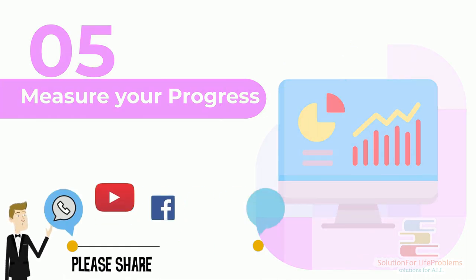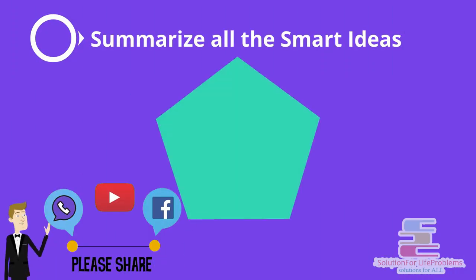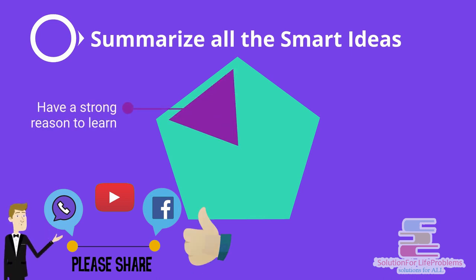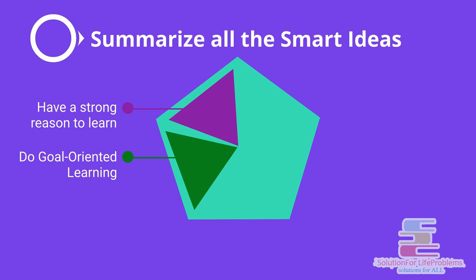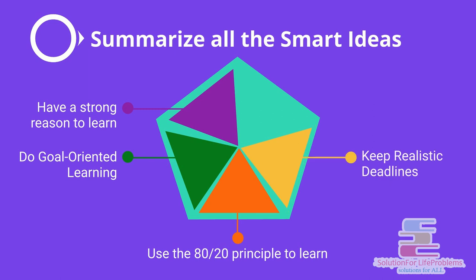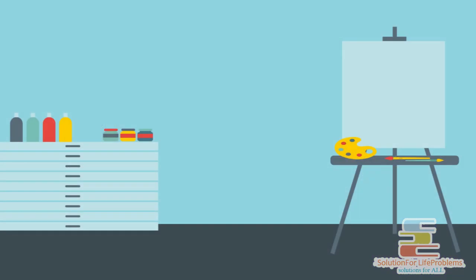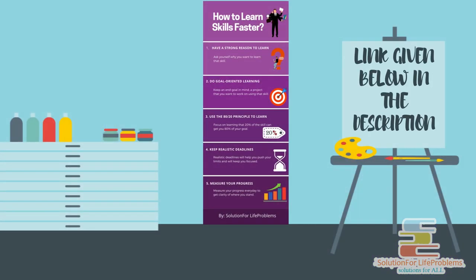Now let's summarize all the smart ideas we have discussed so far. First, having a strong reason to learn. Second, do goal-oriented learning. Third, use the 80 to 20 principle to learn. Fourth, keep realistic deadlines. And fifth, measure your progress. You can also download the infographic summary from the link in the description for your reference.